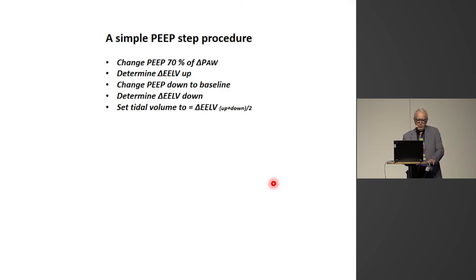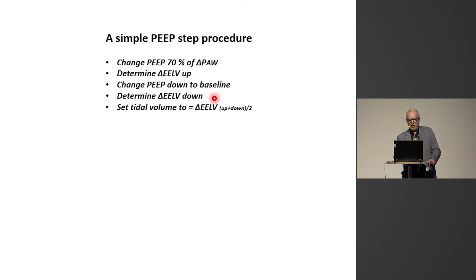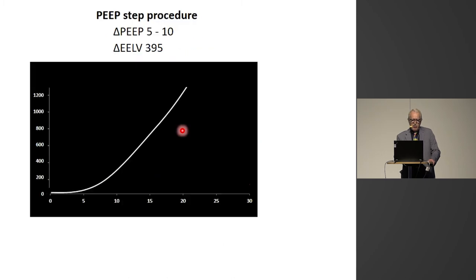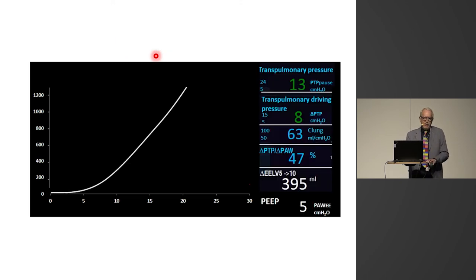By a simple PEEP step procedure, where you change PEEP from the baseline clinical PEEP by 70% of the airway driving pressure, you determine the lung volume increase over two minutes, then change back to baseline and determine the lung volume decrease, and set the tidal volume equal to the delta EELV. When you do that, you can construct a lung PV curve from end expiration at the low PEEP to end inspiration at the high PEEP. Here is an example after a PEEP step from 5 to 10, where the measured delta EELV was 395 milliliters. Whatever you change — tidal volume or PEEP — the transpulmonary tidal PV curve will move along this curve.